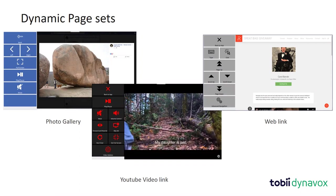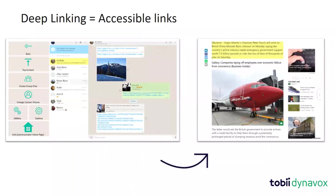What we're really proud of is the way these apps work: on the right side of the screen you see the app — YouTube, Netflix, Instagram, WhatsApp — and on the left side you get the Communicator 5 page set that matches it. These page sets are dynamic, meaning the content on the left responds to what's displayed on the right. As you scroll through a social media feed and encounter photo galleries, web links, YouTube links, or videos, the page set changes automatically.